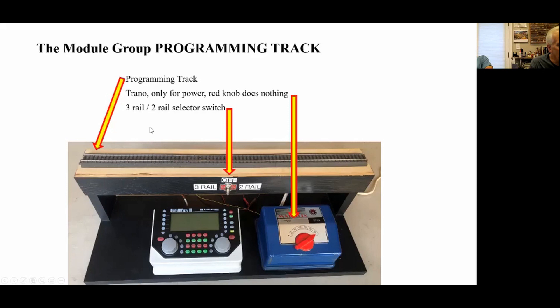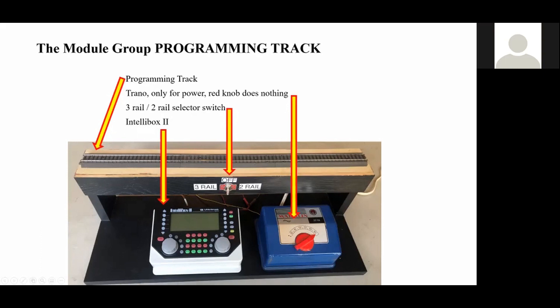This is a selector switch. If you're going to be adjusting a three-rail locomotive, you put it on this way. And if it's two-rail, you go this way. And obviously, this is our IntelliBox 2.